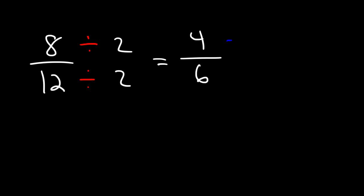Now we still have even numbers, so we can divide it by 2 again. 4 divided by 2 is 2, 6 divided by 2 is 3. So the answer is 2 over 3.